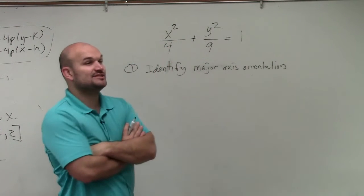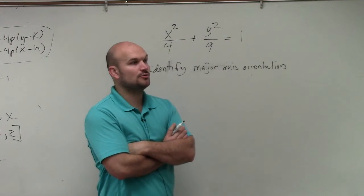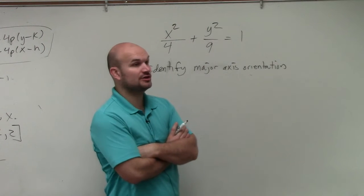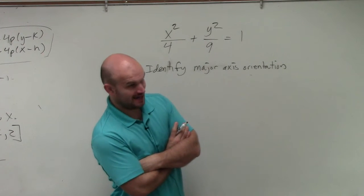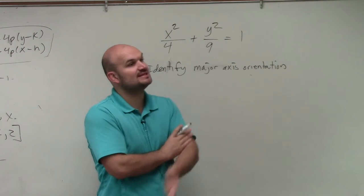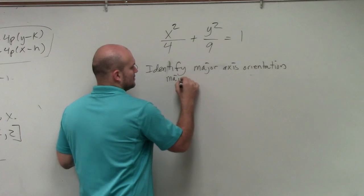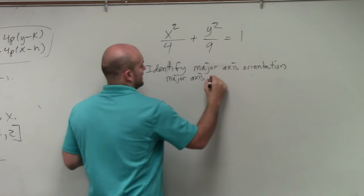Well, we have an A squared and we have a B squared, right? Which one is always larger? A squared. So the larger number is under which variable? Y. So we have our A squared is under the Y, so that means our major axis is going up and down. Does that make sense? So we can say that the major axis is vertical.